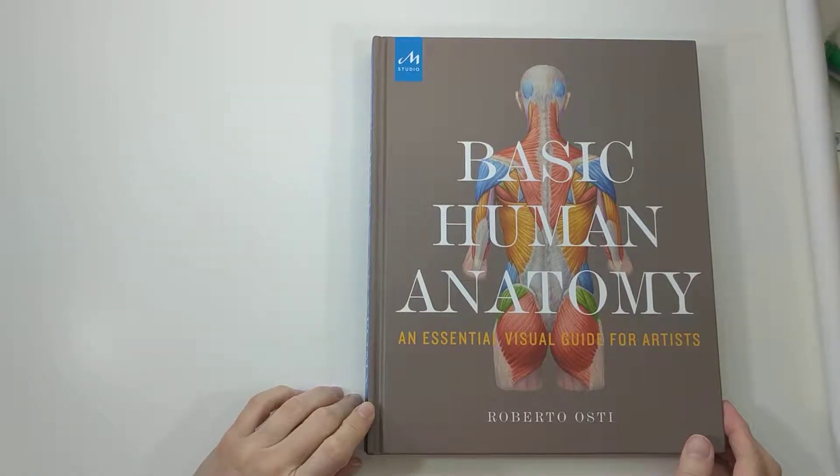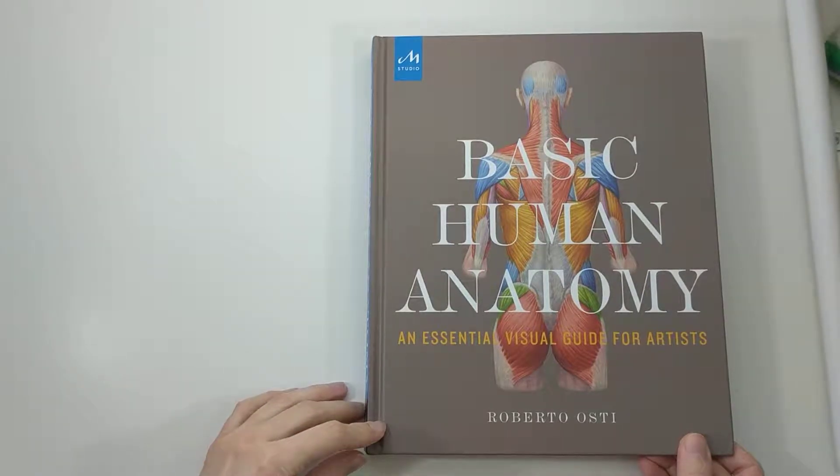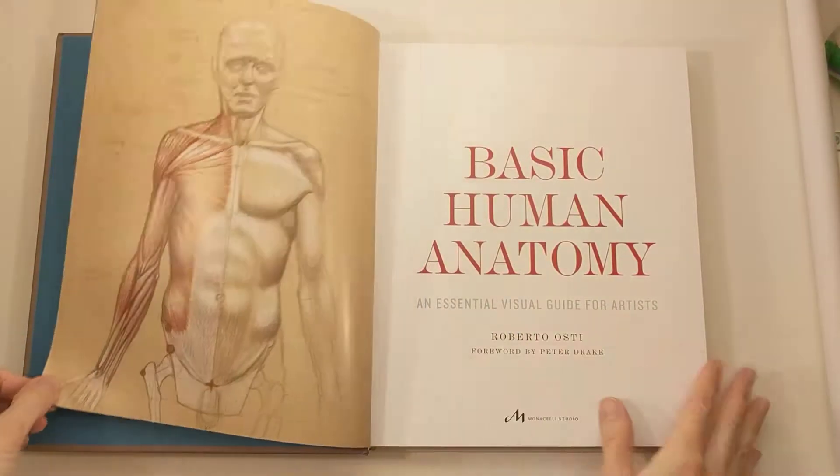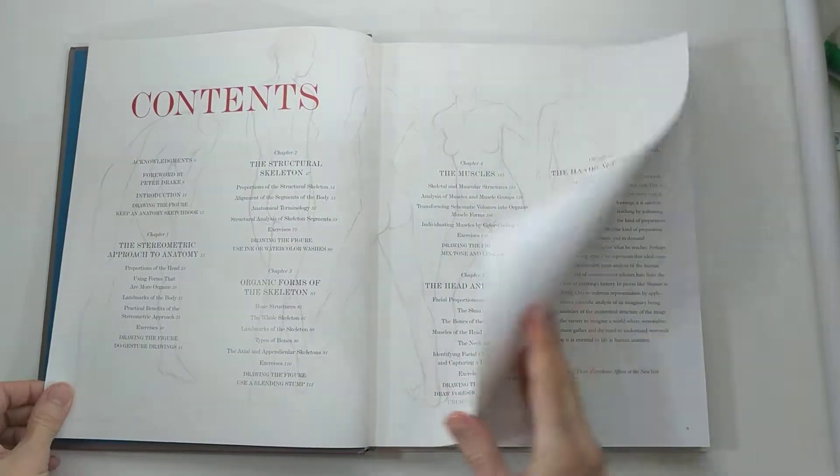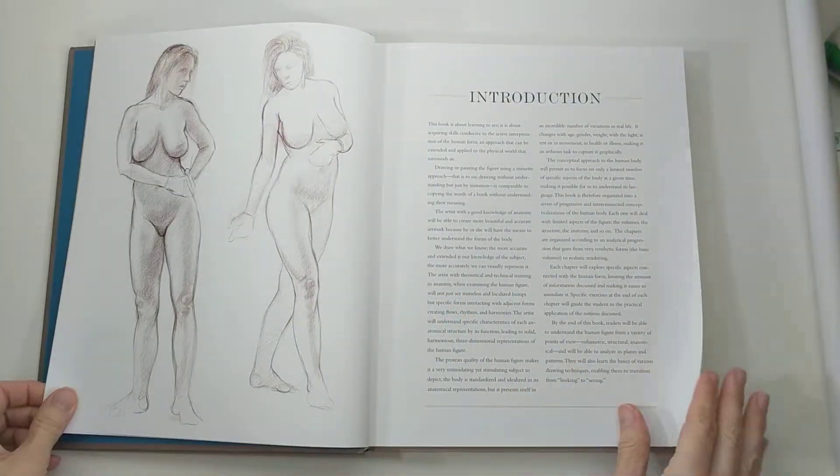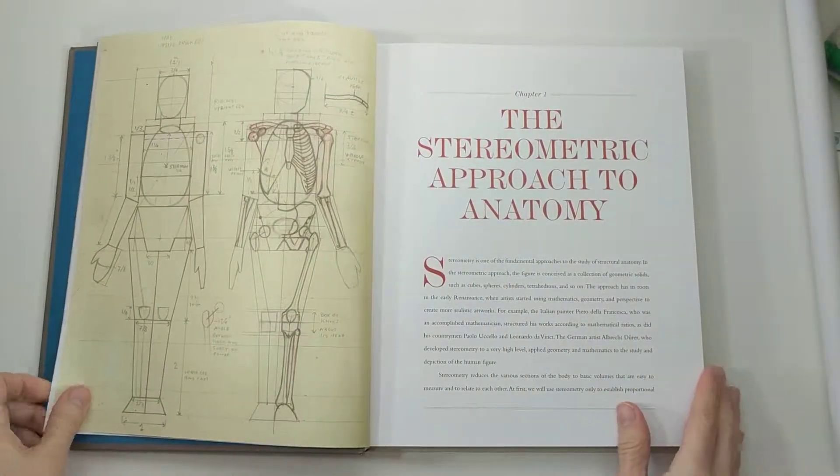This book is Basic Human Anatomy, an Essential Visual Guide for Artists by Roberto Osti. I'm not sure exactly how he pronounces his last name. I just got this book. It was published in 2016, but it's new to me, and I have fallen in love with this book.